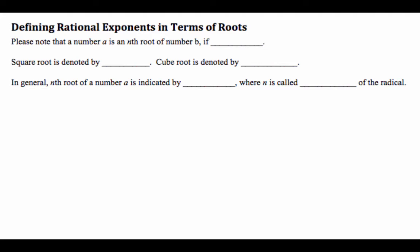We note that a is the nth root of number b if we know that a to the n is b. What we're saying is that the nth root is sort of like an inverse relationship to the square. Square root, in the past, we've denoted by that is the square root notation.